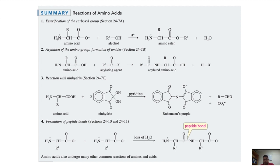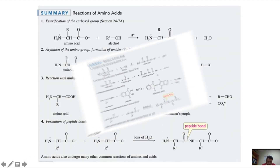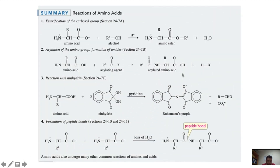Here is the summary of these reactions happening on amino acid terminals. The first was esterification of the carboxyl group, in which an alcohol reacts with an amino acid under an acidic environment to produce an ester. The second reaction was acylation of amino groups, where an acylating agent converts the amino acid into an acylated amino acid. The third reaction was with ninhydrin, which in the presence of pyridine produces Ruhemann's purple and converts the amino acid side chain into an aldehyde. Of course, formation of a peptide bond is also another type of amino acid reaction, which we haven't discussed today.